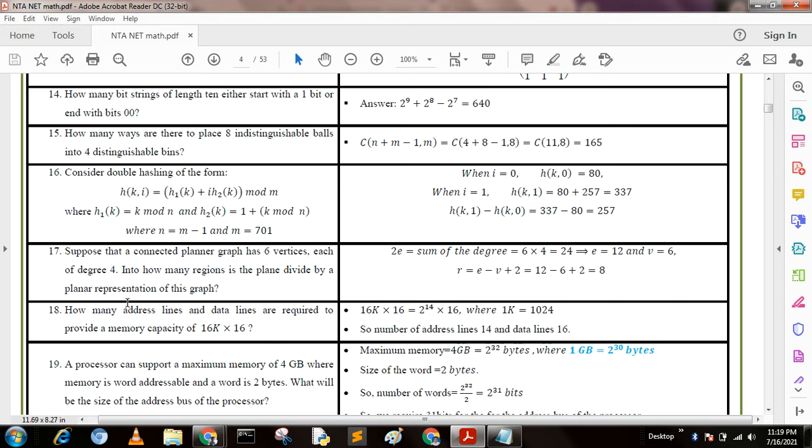Next question: How many address lines and data lines are required to provide a memory capacity of 16K × 16? 1K = 2^10, so 16K = 2^14. Therefore, number of address lines = 14 and data lines = 16.